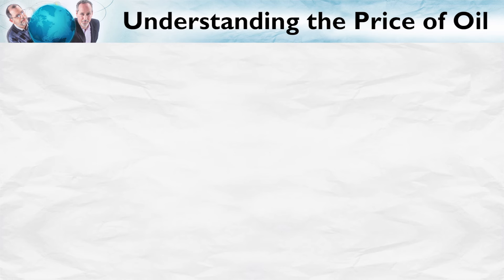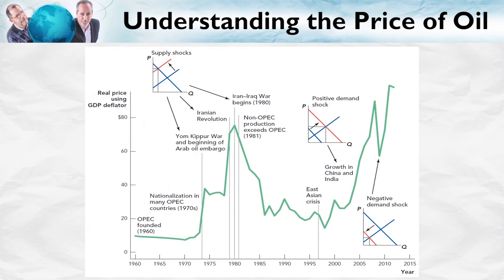Using the simple but powerful model of supply and demand, we can also understand important events in world history. Let's look at the price of oil over the last 50 or 60 years. In 1973, for example, OPEC first flexed its power by reducing the supply of oil in an embargo, and the price of oil skyrocketed. The big price increase makes sense because there aren't many good substitutes for oil in the short run. The Iranian Revolution and the Iran-Iraq War were also important negative supply shocks, which pushed up the price of oil.